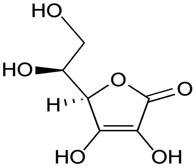In metal displacement reactions, a metal atom in a compound is replaced by an atom of another metal. For example, copper is deposited when zinc metal is placed in a copper sulfate solution: Zn + CuSO4 → ZnSO4 + Cu. In this reaction, zinc metal displaces the copper ion from copper sulfate solution and thus liberates free copper metal.